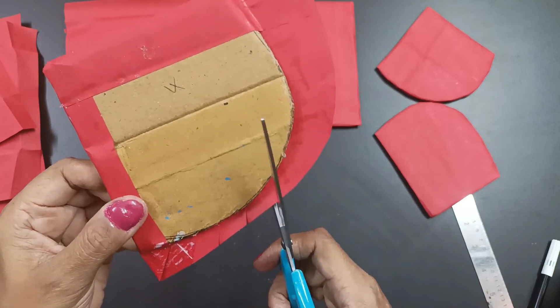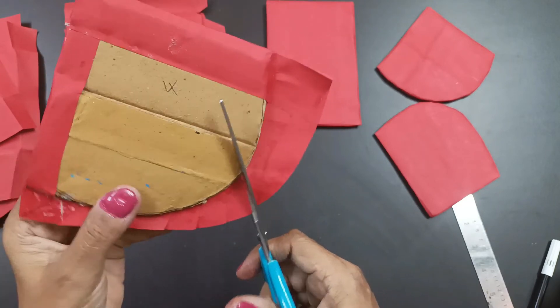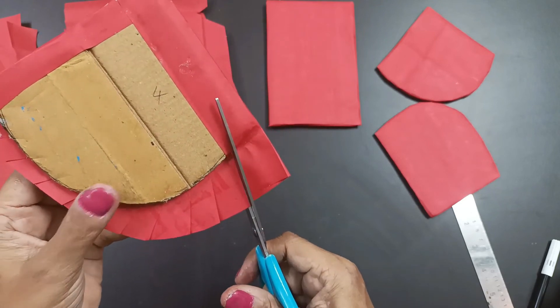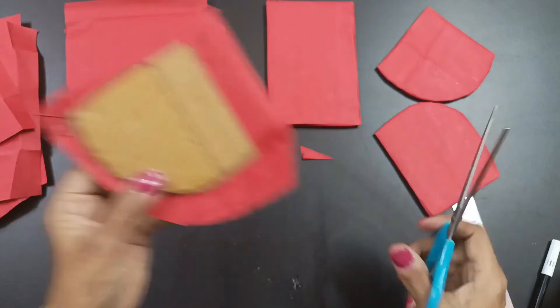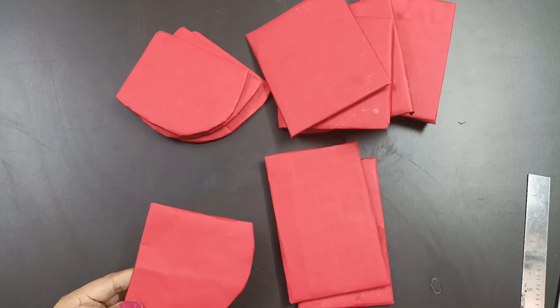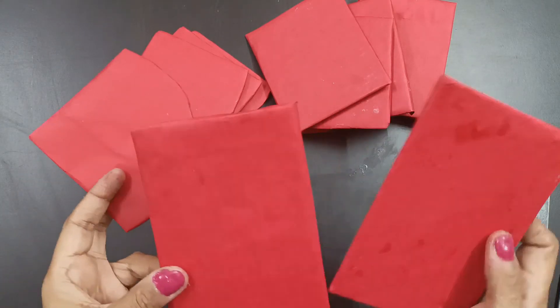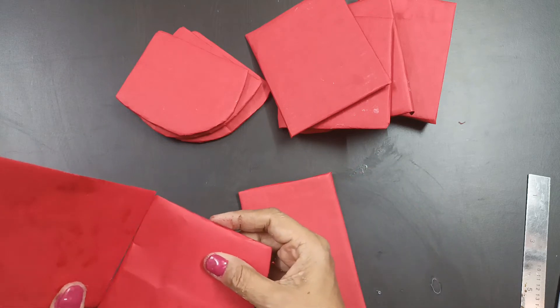Now I'm cutting this as shown in this video previously also. Cut, cut, cut and let this be a little bit. Now all my semicircles and rectangles are ready. Now I'm going to stick them with the hot glue gun like this.